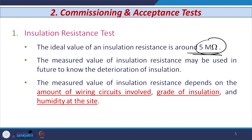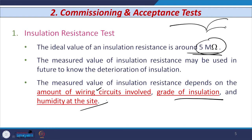The measured value of insulation resistance depends on many parameters — for example, the type of wiring circuit used, the insulation class or grade of insulation, and the humidity at the installation location. If installed in dry conditions, the insulation resistance is different than if installed in hilly areas or other locations, since it depends on humidity at that particular location.